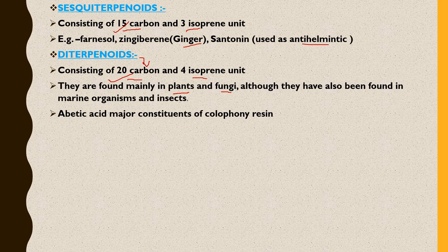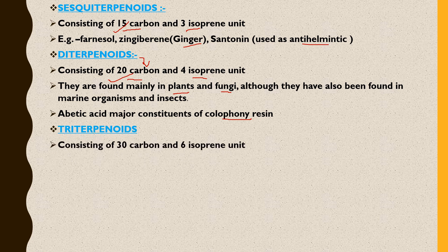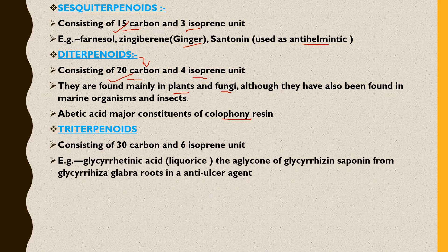Triterpenes consist of 30 carbons and 6 isoprene units. An example is glycyrrhizinic acid, which is the aglycone of glycyrrhizin saponin from the roots of licorice (Glycyrrhiza glabra). Glycyrrhizinic acid — meaning glycyrrhizin without its sugar part — is used as an anti-ulcer agent.